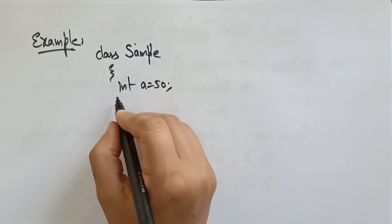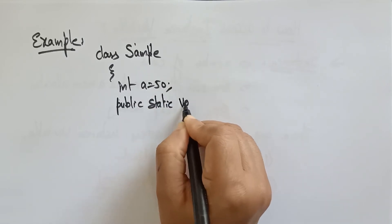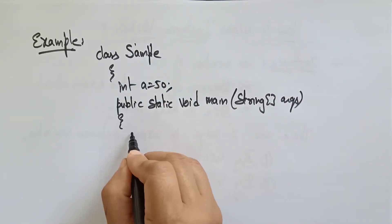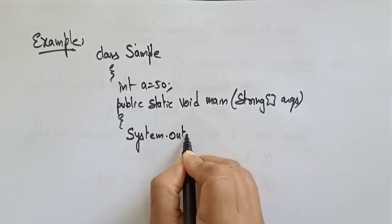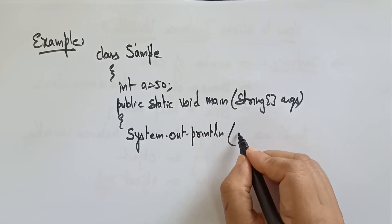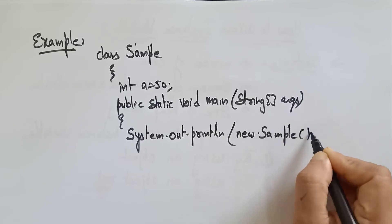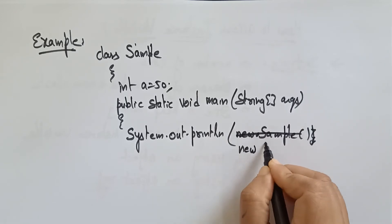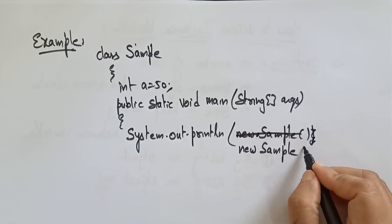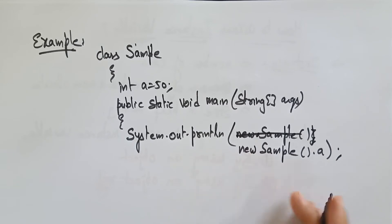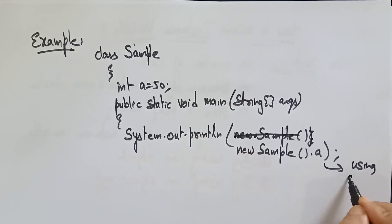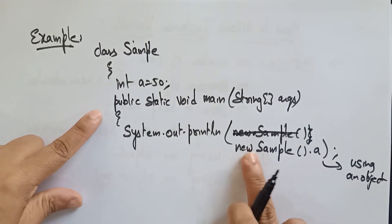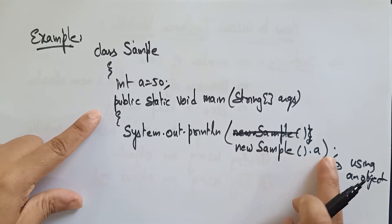Inside the public static void main(String[] args) method, I am directly writing System.out.println(new Sample().a). Here, new Sample() creates an object and we access the instance variable a directly using that object. This is the first way — accessing an instance variable using an object.